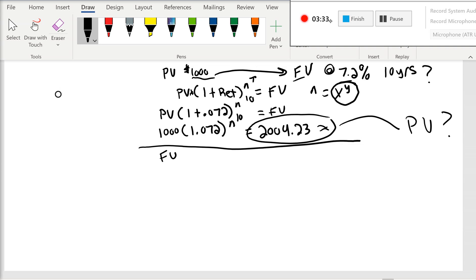And the way we're going to do this, we're going to take the future value, divided by 1 plus our return, or the interest rate that we got, to the exponent of time.